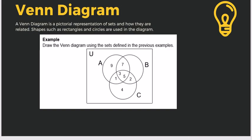Let's have the Venn diagram. A Venn diagram is a pictorial representation of sets and how they are related. Shapes such as rectangles and circles are used. The rectangle represents the universal set. Using the Venn diagram, we can illustrate the previous examples — when we say universal, it covers the entire box. When we say set A, we can get a portion from B and a portion from C. Only the full circle of set A is what we focus on.